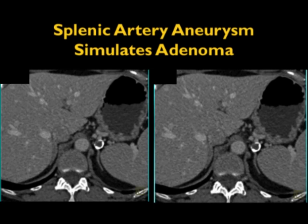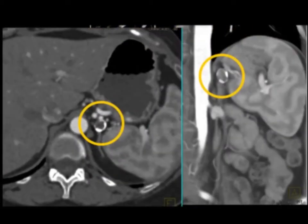Splenic artery aneurysms in a tortuous splenic artery can also be misleading. This looks like a calcified splenic lesion — if you thought it was a calcified adrenal lesion, you might have said it was an old hematoma, which would be a leave-alone lesion. But recognize that splenic artery aneurysms can simulate adenomas in some cases.